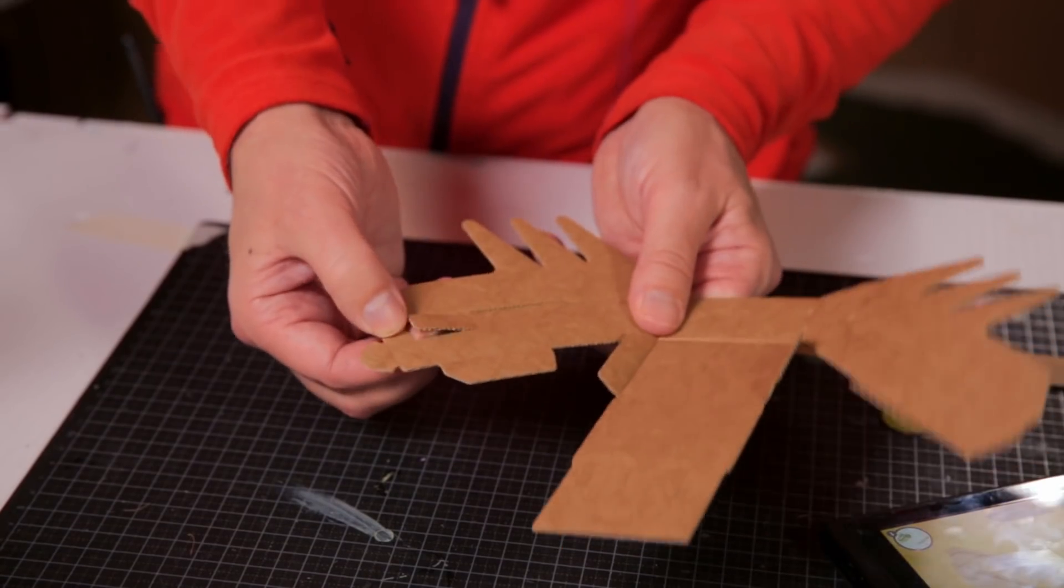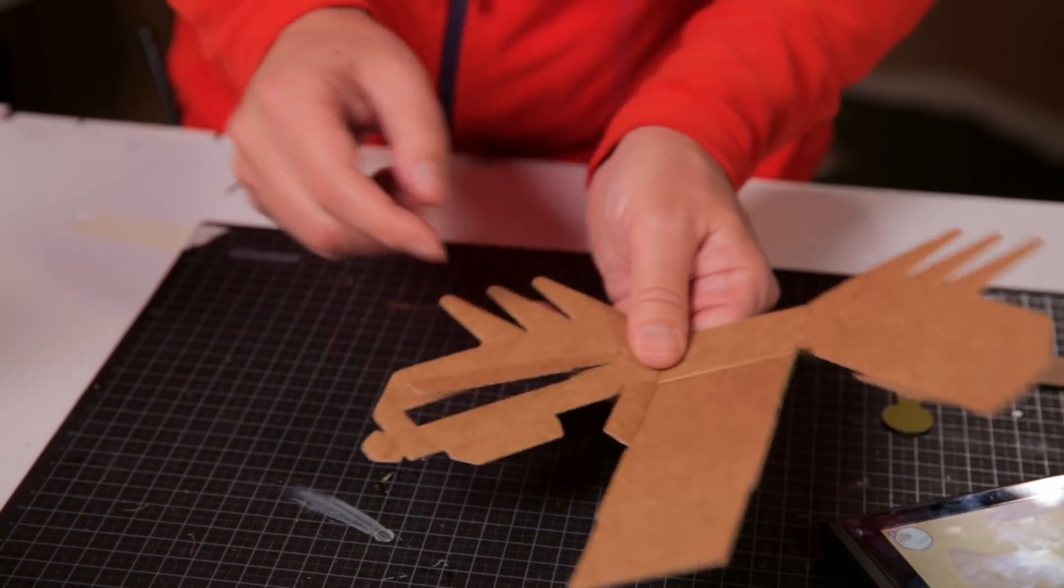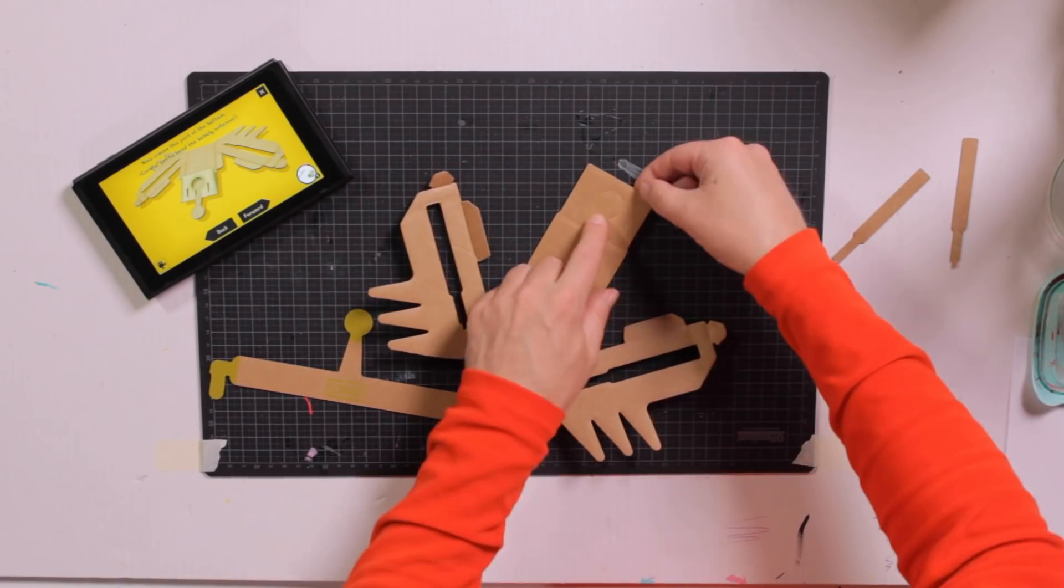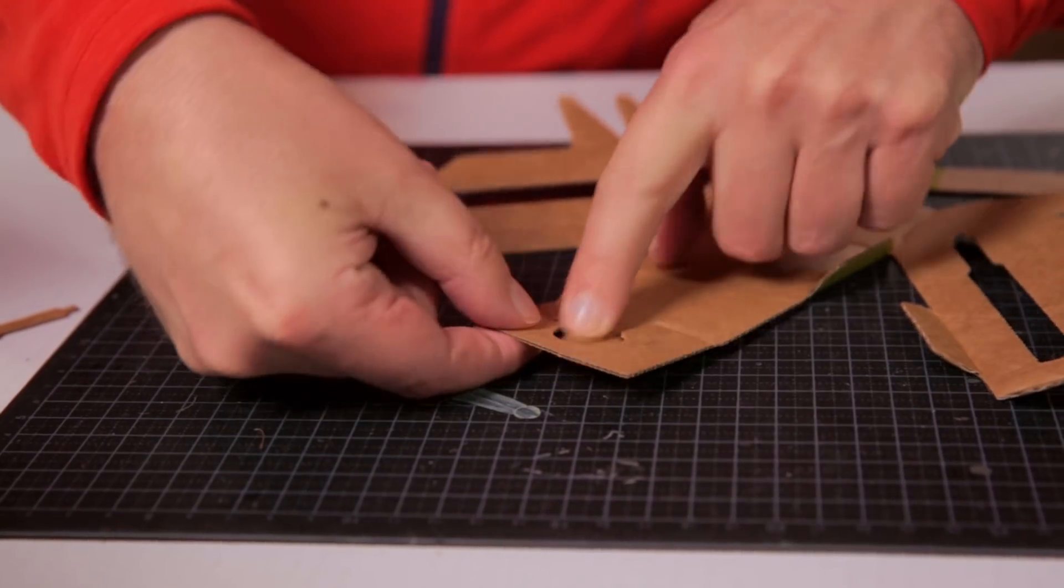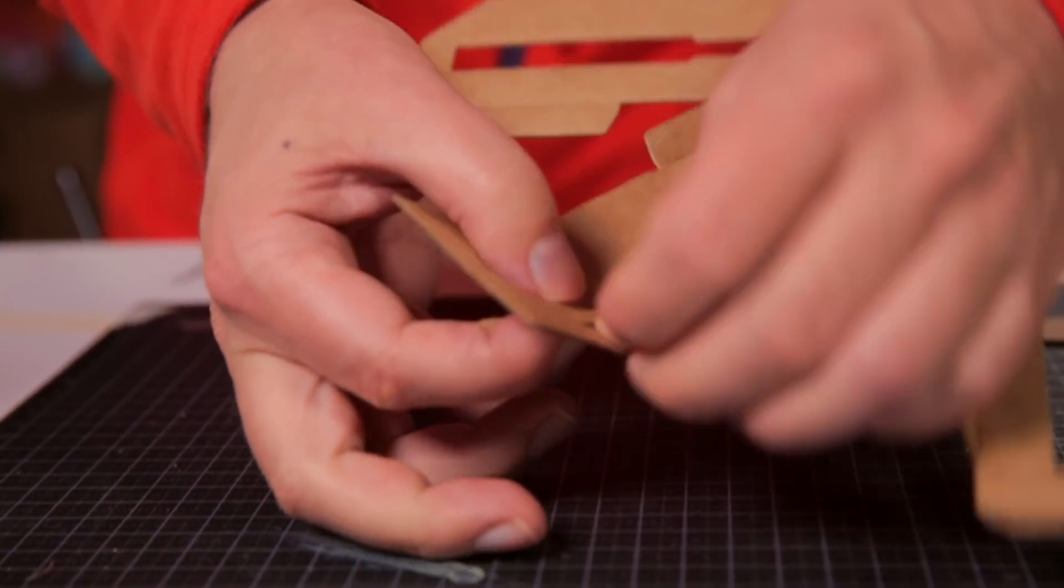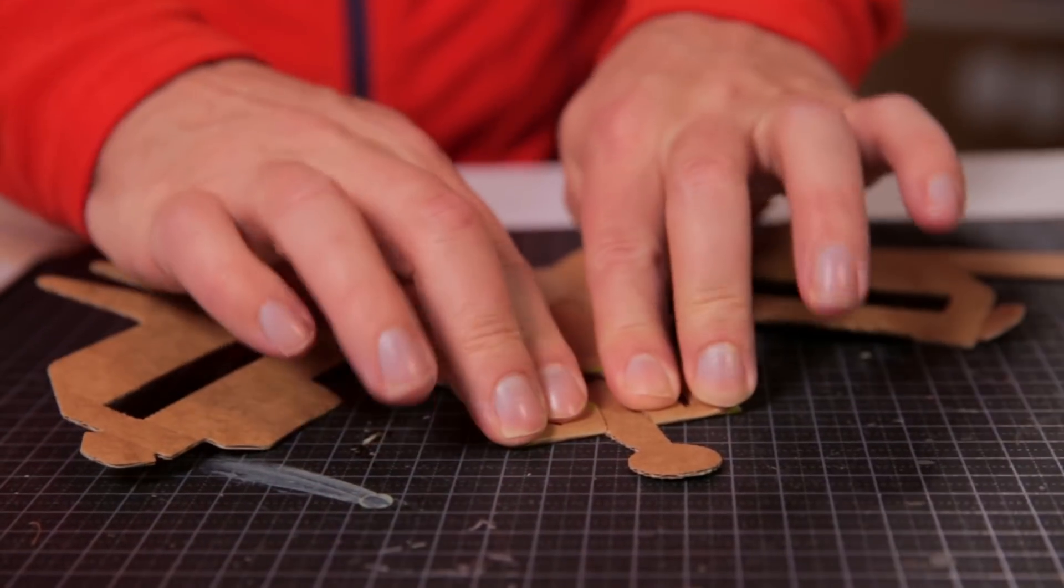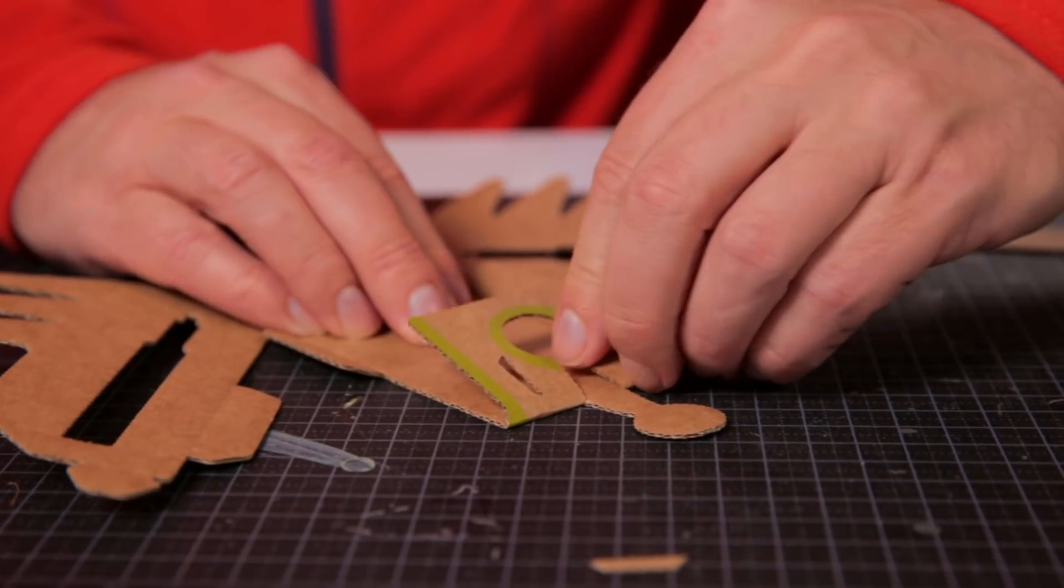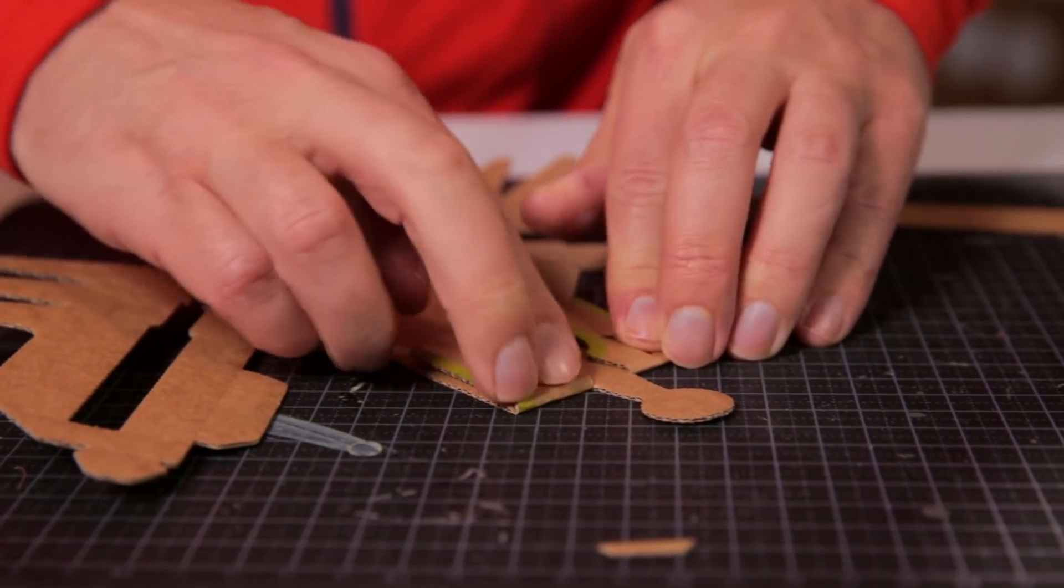And then everything that is pop-outable, you pop out. And then you take this one, leave this one behind, but push this one up. And pop these things out. Press a bit so that you soften up the cardboard because it can be quite rigid if you don't.